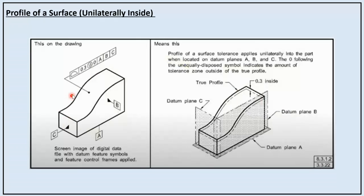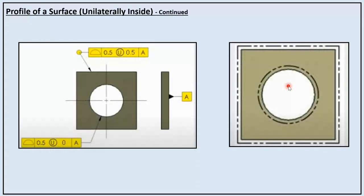For profile of a surface unilaterally inside: unlike the previous case, we have a geometrical tolerance of 0.3 which is unilaterally inside. This means the geometrical tolerance outside the component is zero and the complete geometrical tolerance is within the component. The profile of a surface tolerance applies unilaterally into the part when located on datum planes A, B, and C. The zero following the unequally disposed symbol indicates the amount of tolerance zone outside of the true profile. In the similar example, profile of a surface 0.5 unequally disposed with zero tolerance references datum A, and the hole size is increasing as is the rectangular component size.